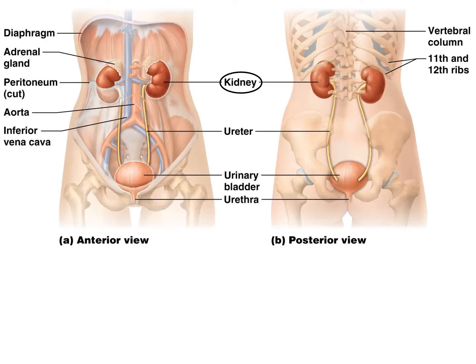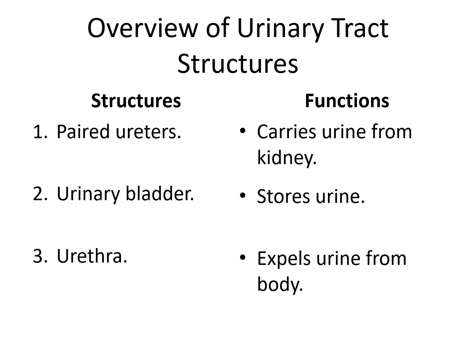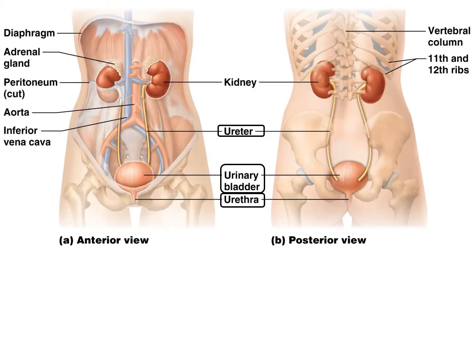Here is just the location of the kidneys — they are retroperitoneal, toward your back, very close to the posterior. The urinary tract has just a few structures: a pair of ureters that carries urine from the kidney, a urinary bladder that stores the urine, and the urethra that expels urine from the body. Here are the various structures and their locations: ureter, urinary bladder, urethra.